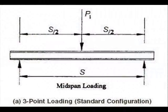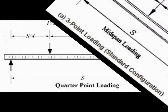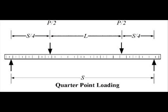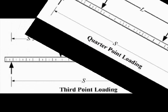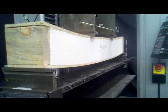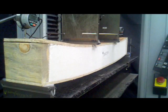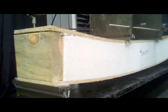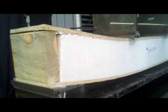Multiple loading configurations are permissible by ASTM C393, with the standard configuration being two beam supports and a single loading point mid-span between the two supports. Any other configuration is considered to be non-standard. Through extensive research and data analysis, NTA Inc. has chosen a non-standard configuration to perform ongoing periodic verification testing for its structural insulated panel certification programs.